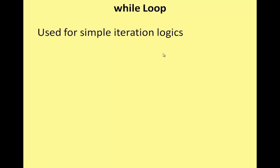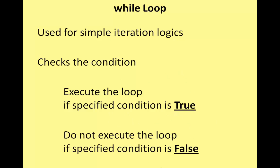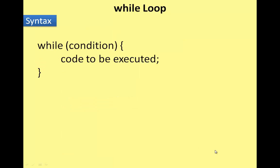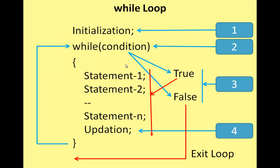While loop — we use simple iteration logic. This is the condition checked first. If the condition is true, the loop executes. If false, the loop does not execute.